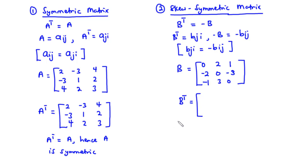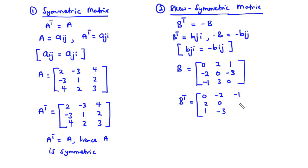For B transpose: row 1 of B is 0, 2, 1, which becomes column 1: 0, 2, 1. Row 2 is negative 2, 0, negative 3, which becomes column 2: negative 2, 0, negative 3. Row 3 is negative 1, 3, 0, which becomes column 3: negative 1, 3, 0. That is B transpose.